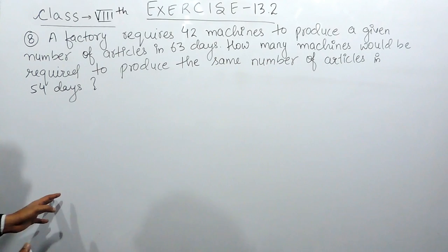A factory requires 42 machines to produce a given number of articles in 63 days. How many machines would be required to produce the same number of articles in 54 days?